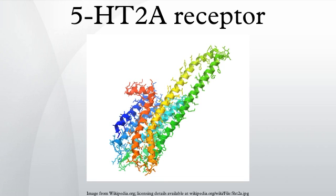Signaling cascade: The 5-HT2A receptor is known primarily to couple to the Gq/G11 signal transduction pathway. Upon receptor stimulation with agonist, Gq/G11 and βγ subunits dissociate to initiate downstream effector pathways. Gq/G11 stimulates phospholipase C activity, which subsequently promotes the release of diacylglycerol and inositol trisphosphate, which in turn stimulate protein kinase C activity and Ca2+ release.